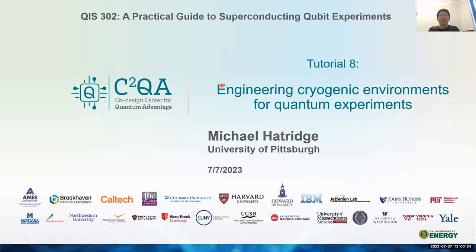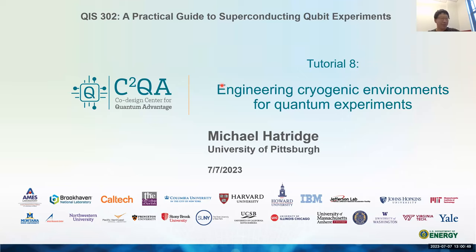Welcome everyone to our last lecture of our lecture series on a practical guide to superconducting qubit experiments. In this very last class, I will chair the session and Michael Hatchage, who you have been very familiar with so far, will give the very last talk on engineering cryogenic environments for quantum experiments. Michael, of course, needs no introduction by now — he's an associate professor at the University of Pittsburgh, and he has been organizing this tutorial series with me. Go ahead, Michael.